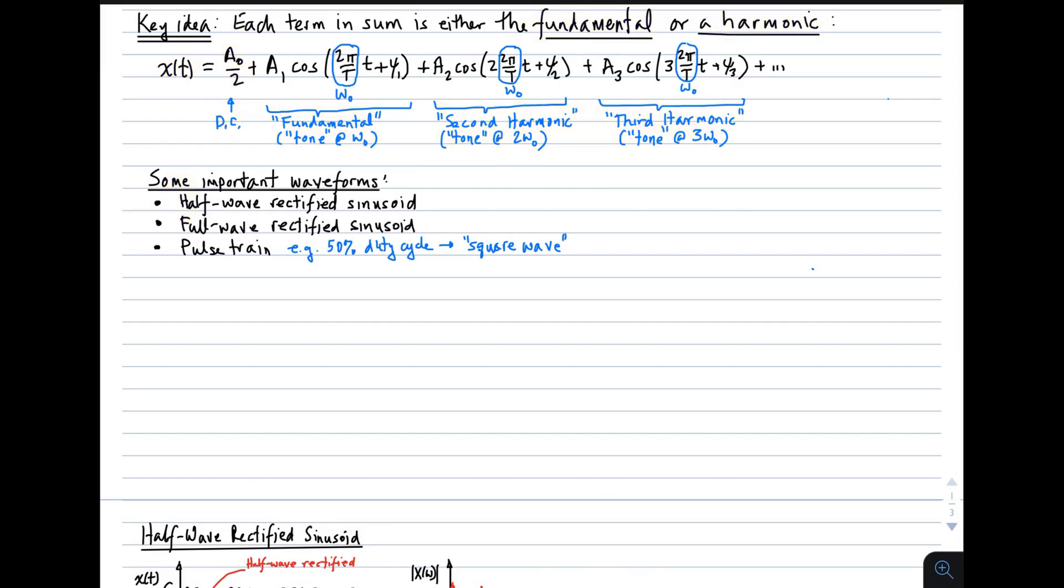Next, I want to use this magnitude-phase formulation to examine some important waveforms, at least to us in RF and microwave engineering. These waveforms include half-wave rectified sinusoids, full-wave rectified sinusoids, and pulse trains. And a special case of pulse train, which I will point out, will be the square wave. That's a pulse train which has 50% duty cycle.